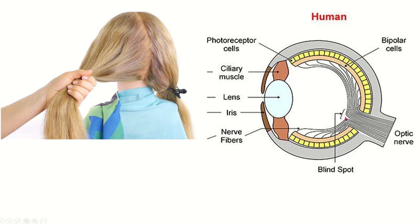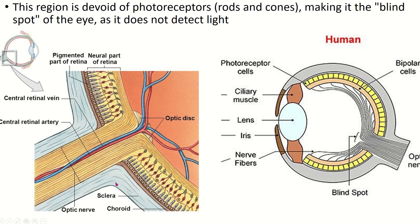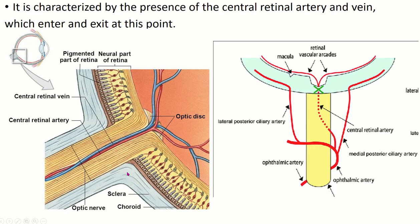The ganglion cell axons form the optic nerve fibers, which divide into two parts and exit the eyeball. This is the head of the optic nerve. This region is devoid of photoreceptor cells — rod and cone cells — making it the blind spot of the eye, as it does not detect light. The optic disc is also characterized by the presence of the central artery and central vein of the retina, which enter and exit at this point.